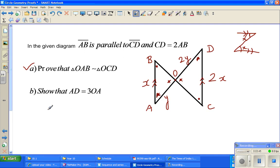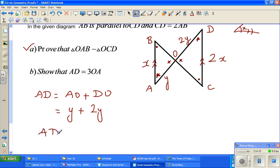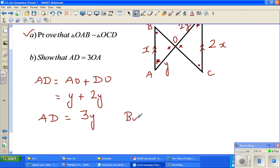Now what is AD? AD is AO plus DO. And what is AO? AO is y plus DO is 2y, so AD is 3y. So AD is 3y, but what is y? Y is OA. Therefore, AD is 3OA. Just like that. Thank you very much.